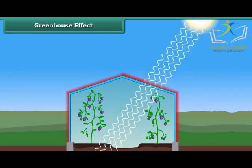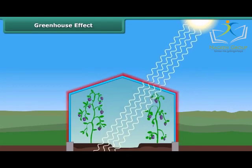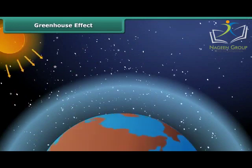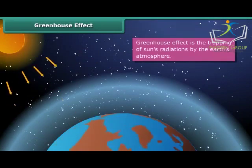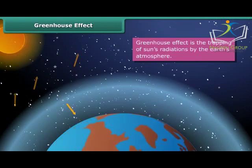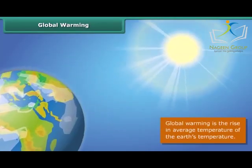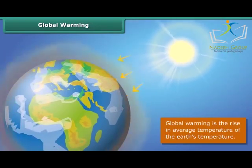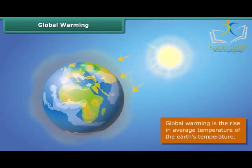Similarly, greenhouse gases like carbon dioxide, methane, and nitrous oxide in the atmosphere act like glass panes. When the sun's radiation reaches our atmosphere, some rays are reflected back into space, and some are trapped by greenhouse gases, causing the atmosphere of the Earth to warm up. Scientists believe that Earth's temperature is going to increase even more in coming years, as greenhouse gases like CO₂ trap heat from the sun and increase the temperature of Earth's atmosphere.